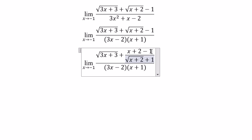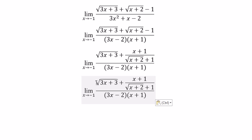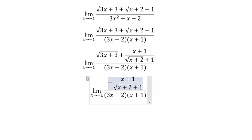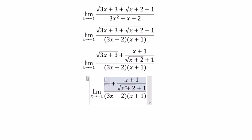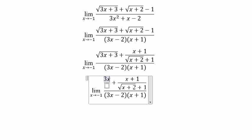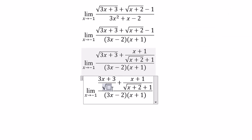So 2 minus 1, you got about 1. Next, about this one, we can put like this, that's about 3x plus 3 over the square root of 3x plus 3.